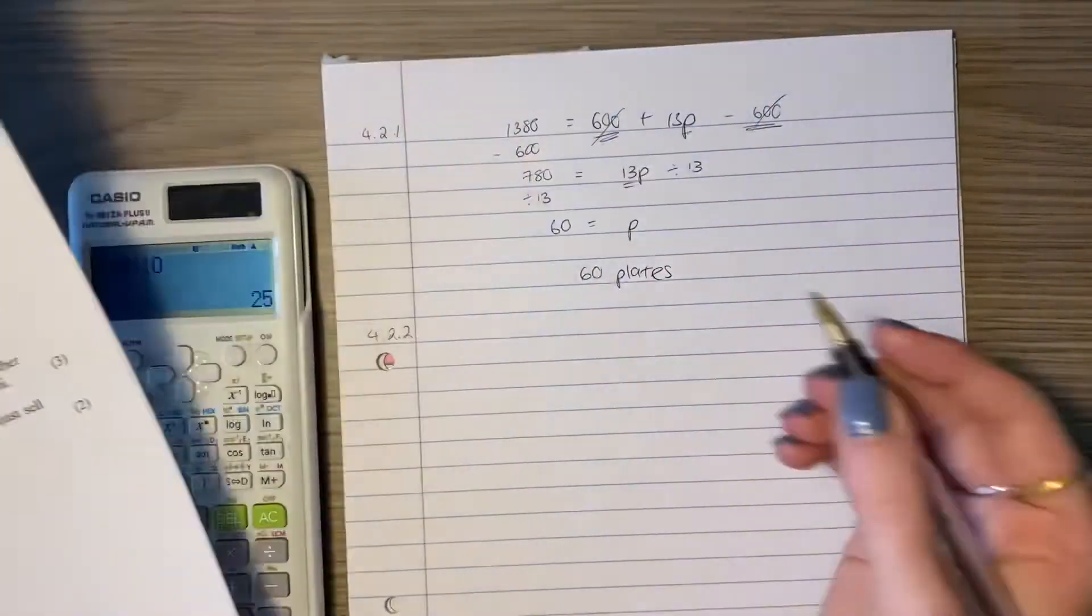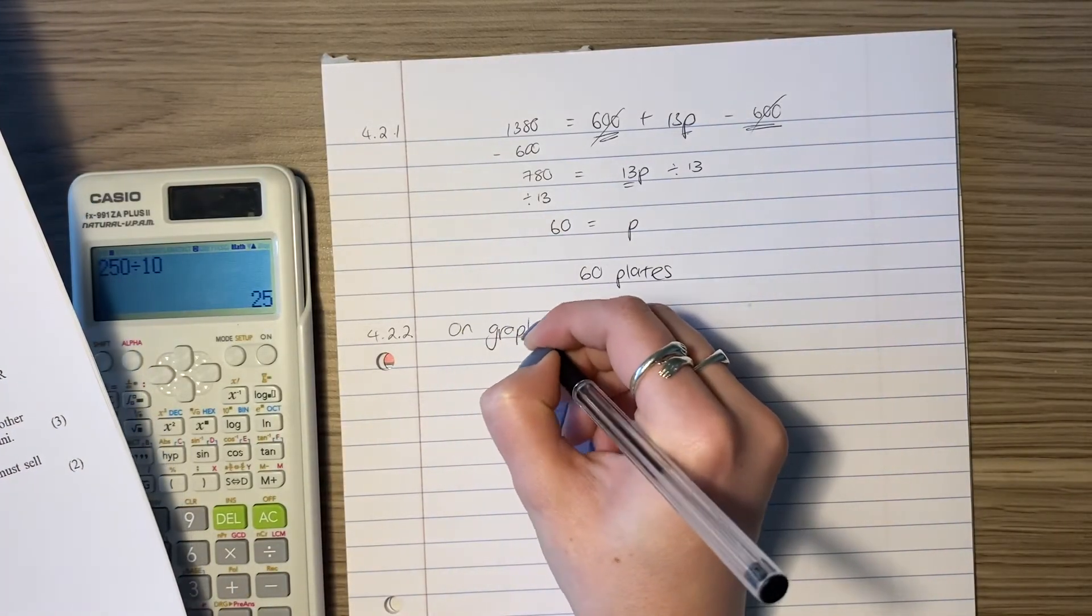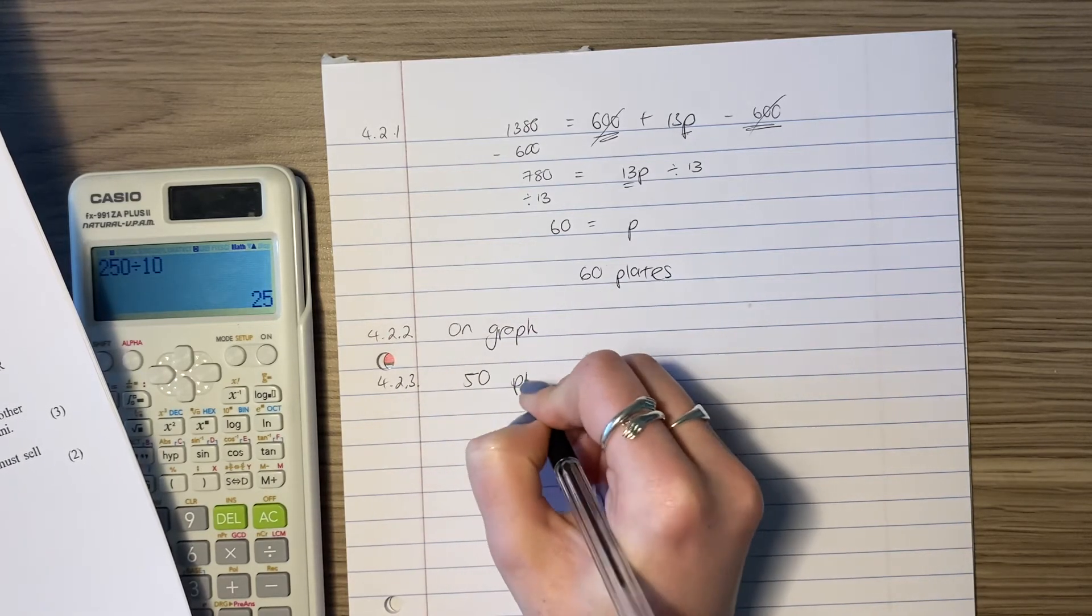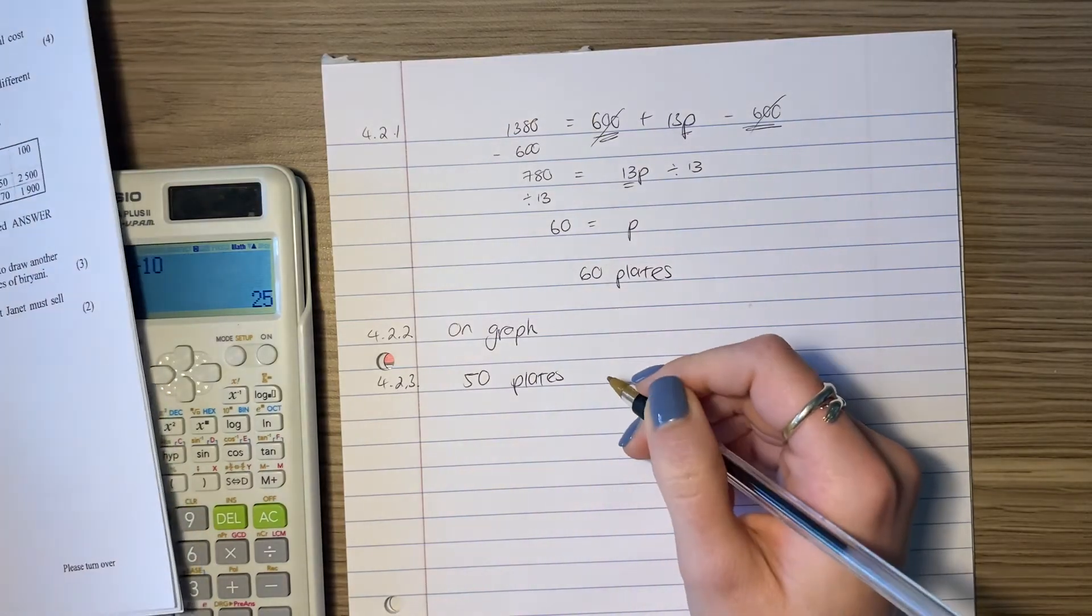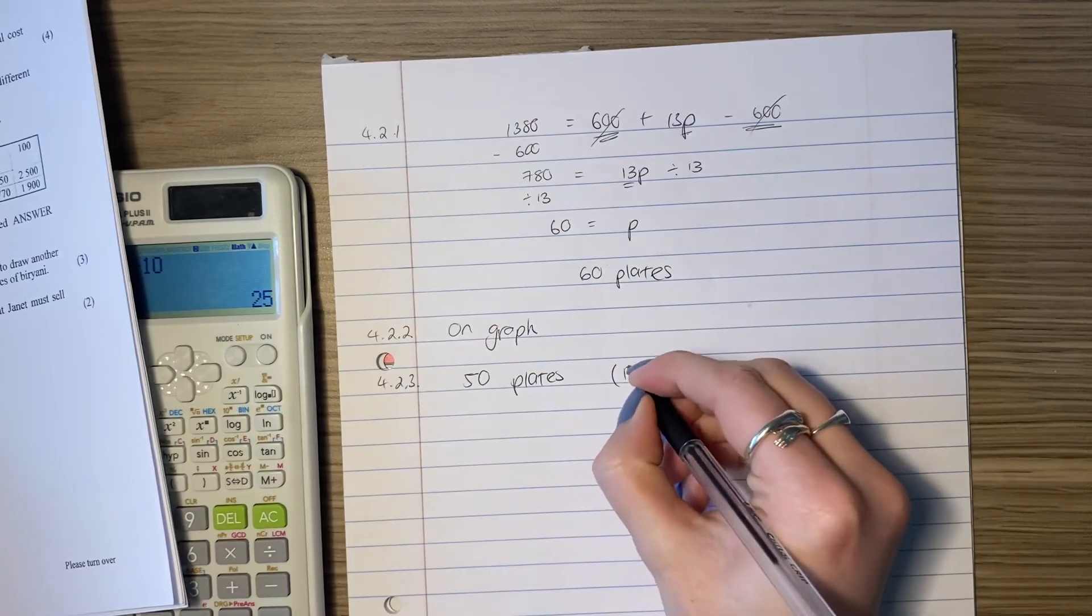So we're going to say my answer is, so there we'll say on graph, because it's not on here. 4.2.3, you would say 50 plates. And if you did this and you're like, oh, I don't actually know what's going on, you couldn't find the 50 plates, you didn't understand it. You could also just write here break-even point.